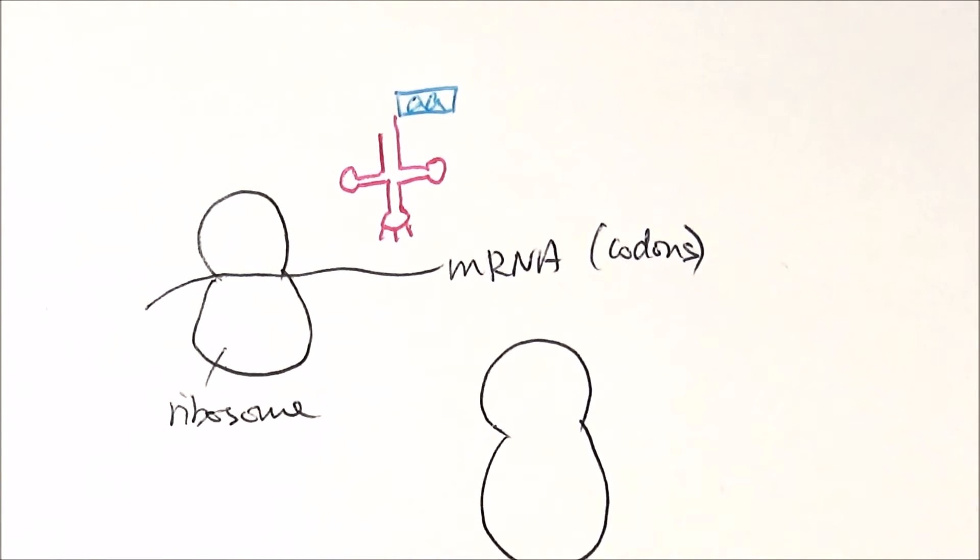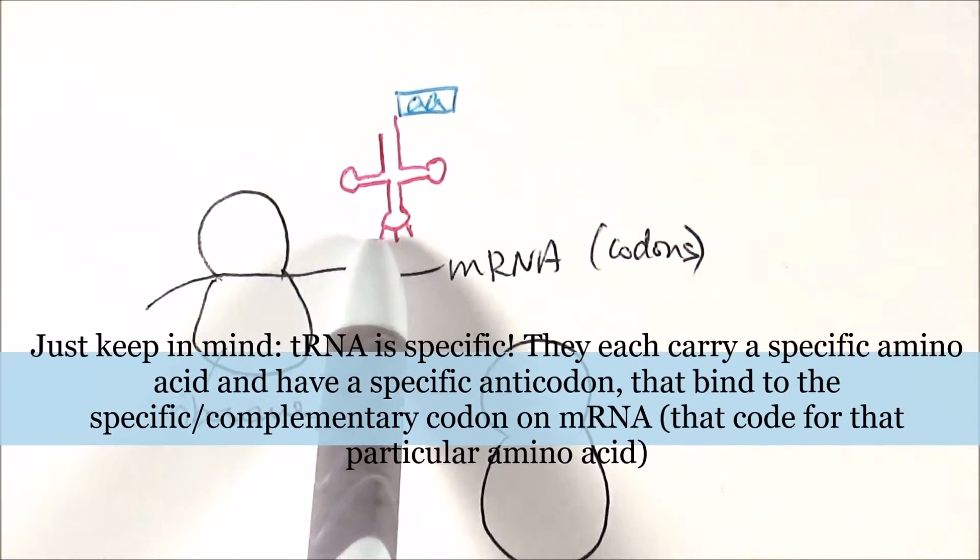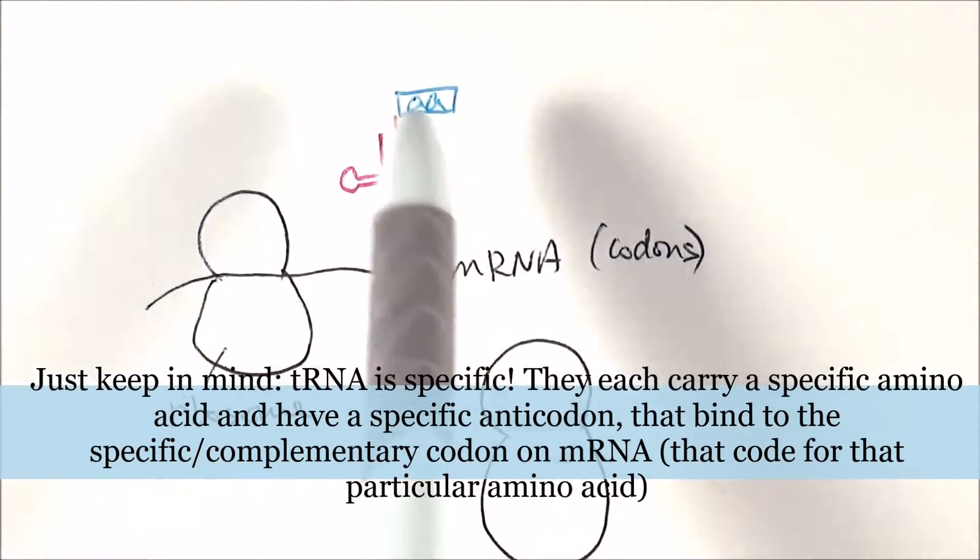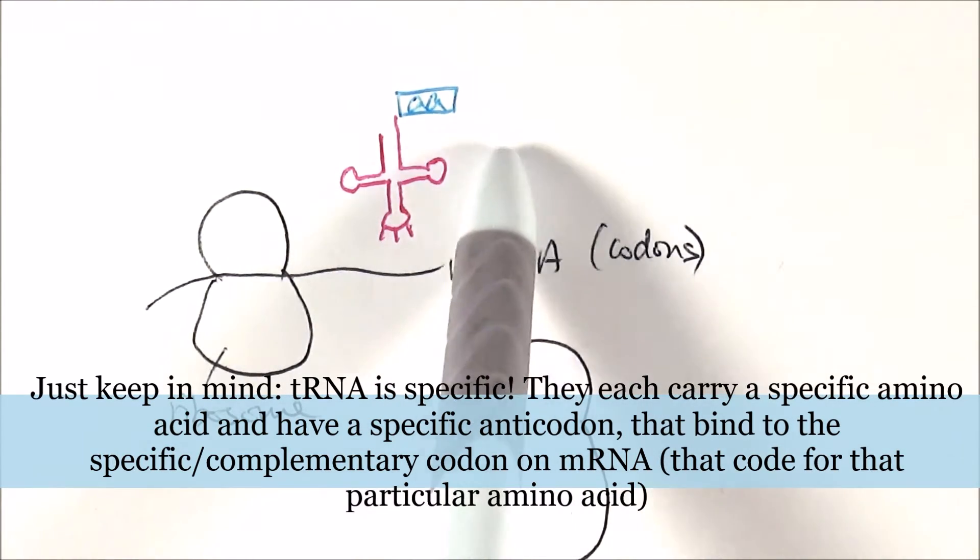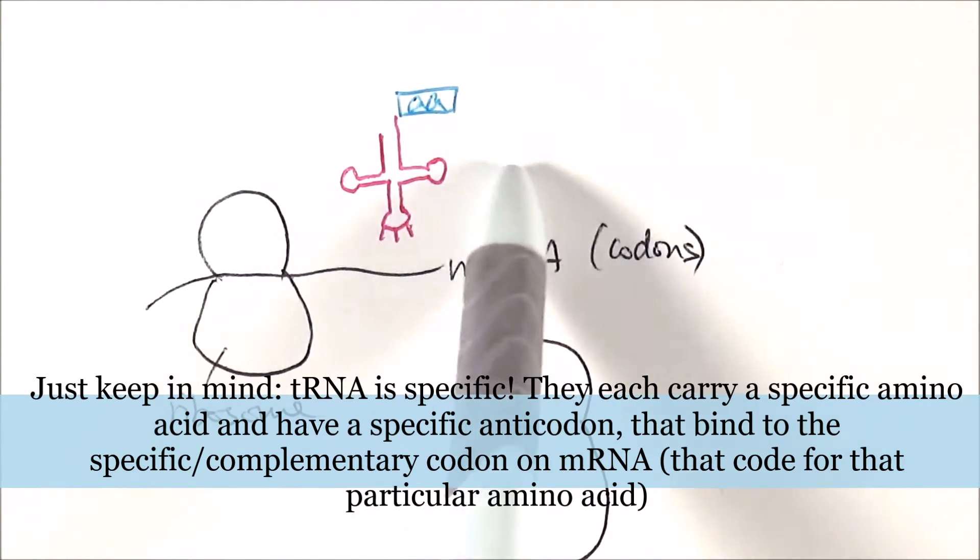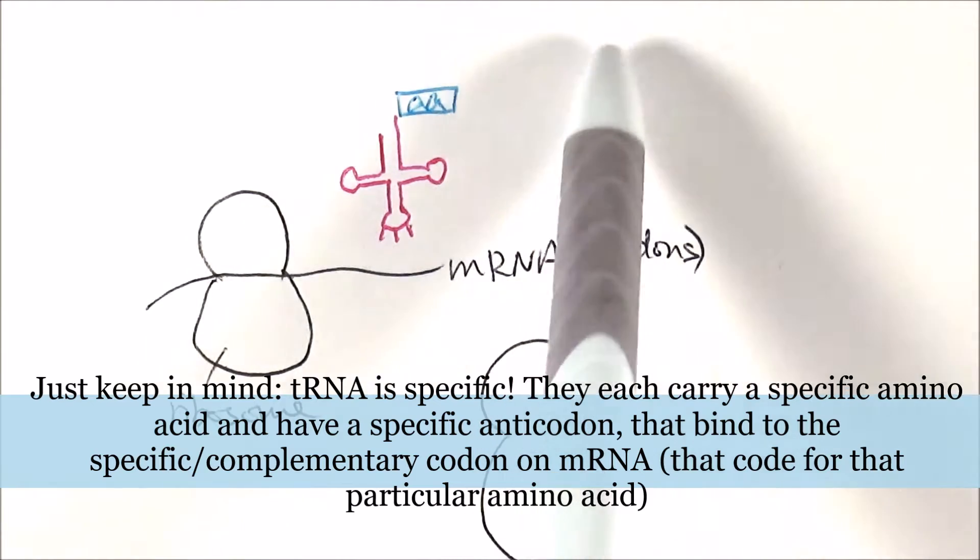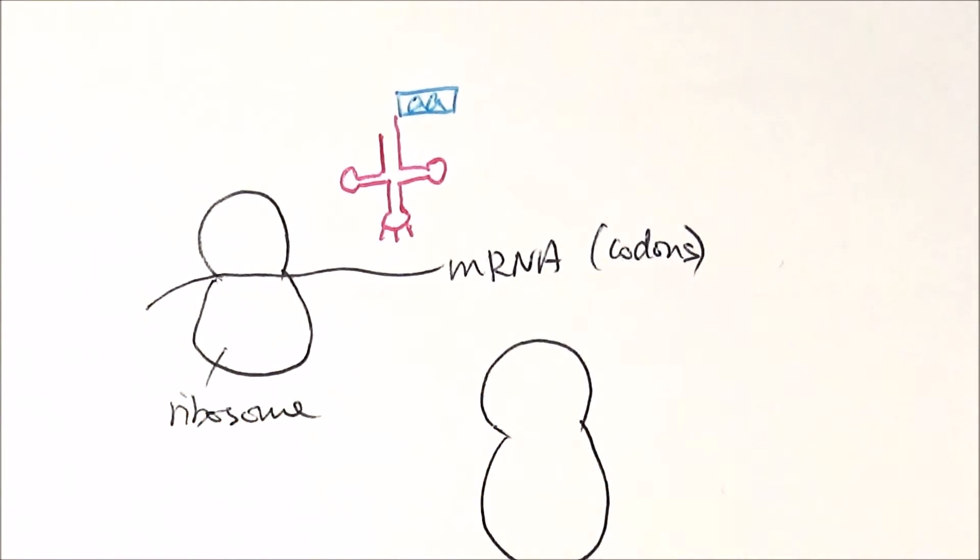Each tRNA carries a specific amino acid. If we have a codon that is complementary to the anticodon, that corresponds to the correct amino acid. If we have a different codon, another tRNA with that specific anticodon combination and amino acid comes in. Those are the different components you need to be aware of.